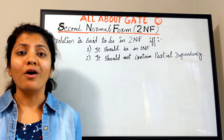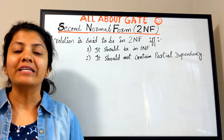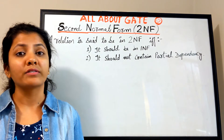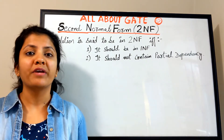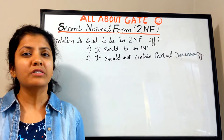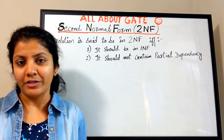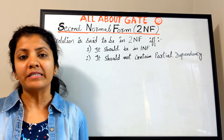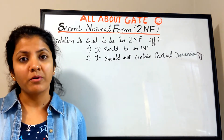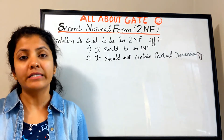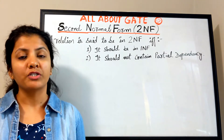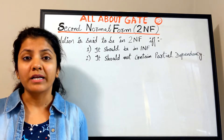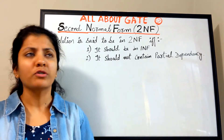Welcome back to the channel where we talk about GATE. We are studying DBMS and have understood what normalization is. In the previous video we covered the first normal form, which is the implicit requirement of a basic relation and has nothing to do with functional dependencies or candidate keys. Now, functional dependency will be the main tool used to define further normal forms.